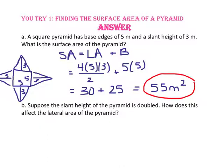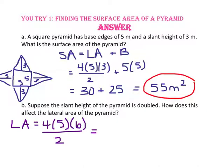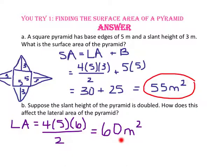For part B, suppose the slant height of the pyramid is doubled. How does this affect the lateral area of the pyramid? Let's use the same pyramid above, but double the slant height so that it is 6 meters instead of 3. The lateral area is 4 times 5 times 6 divided by 2, or 60 meters squared. Compared to the lateral area in the first part, when we double the slant height, the lateral area is doubled.